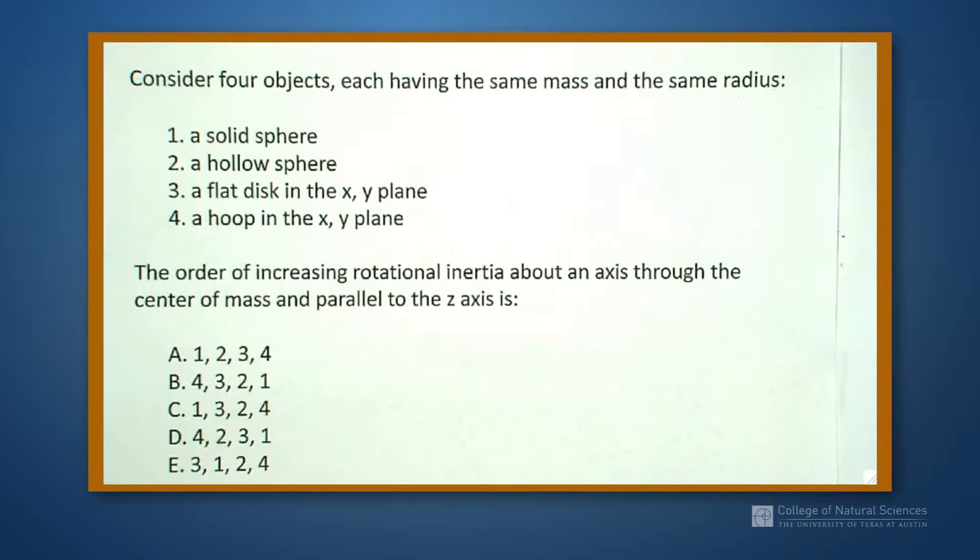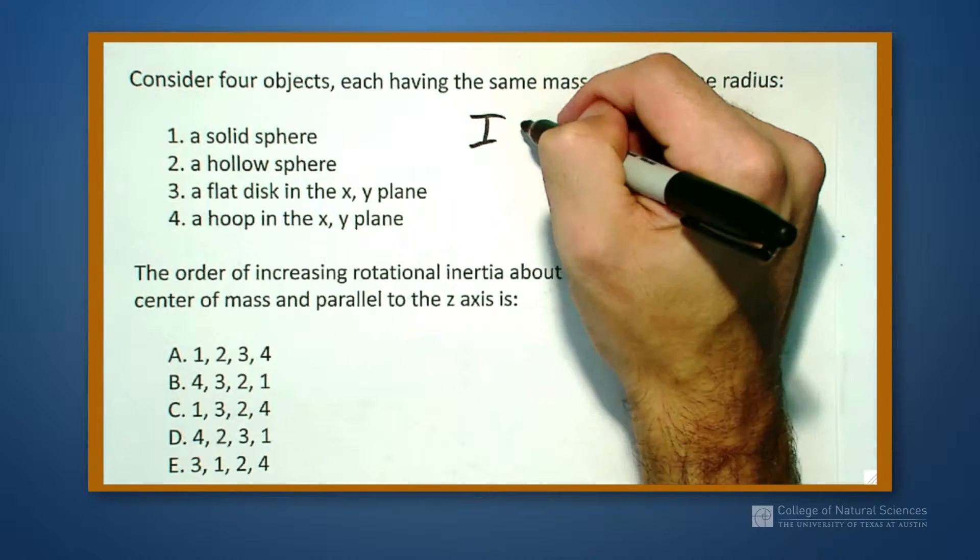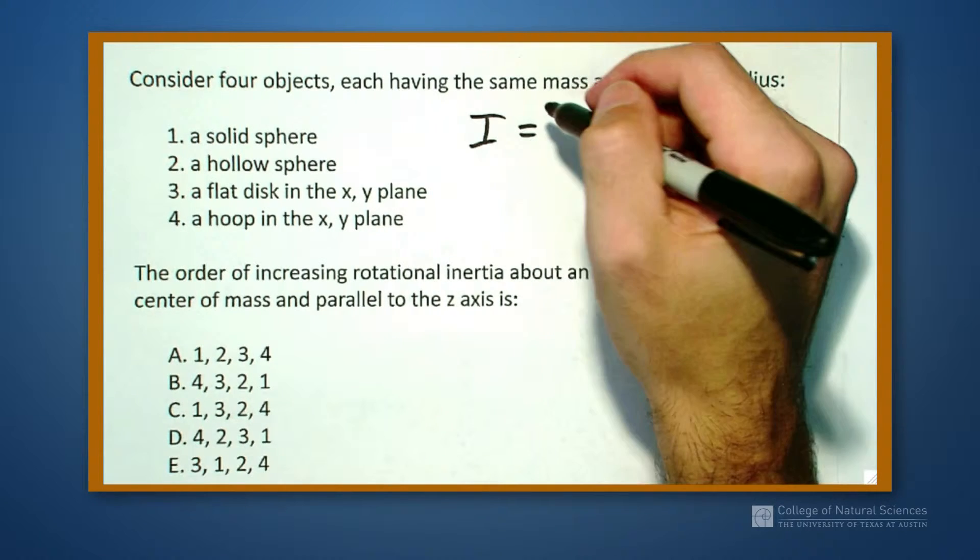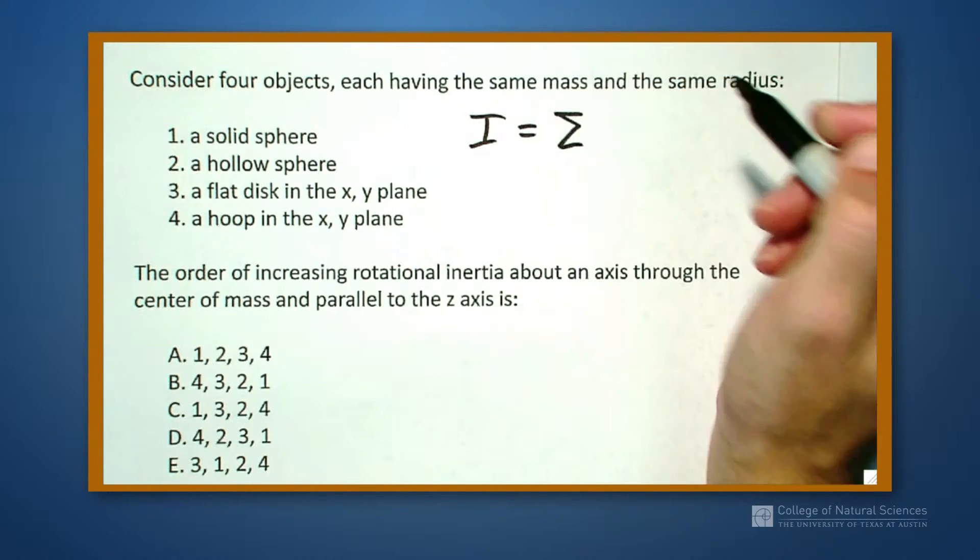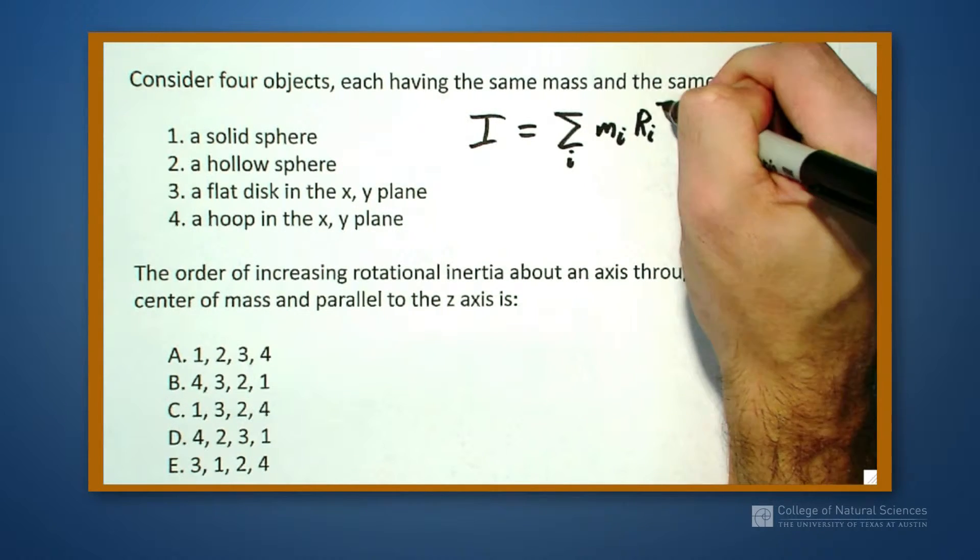And in order of increasing rotational inertia about an axis through the center of mass parallel to the z-axis, we want to rank the moment of inertia I. Well, we know that I is given in two different forms. The one that most people will see or learn first is Σ mᵢRᵢ².